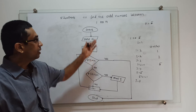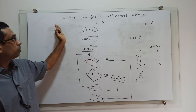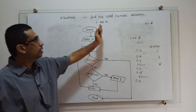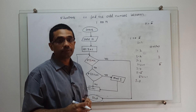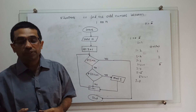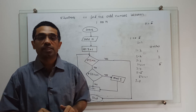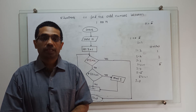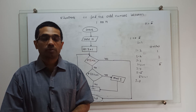That's it. This is the flowchart to find the odd numbers between 1 to n. Thanks for watching this video. Kindly subscribe to my channel for the forthcoming videos. Thank you.